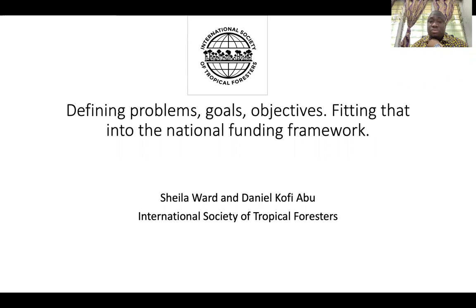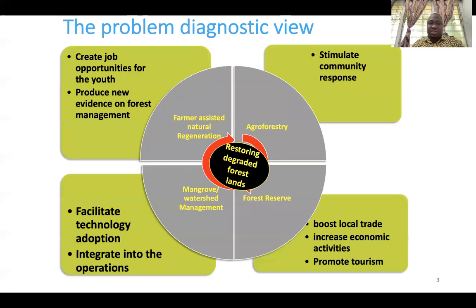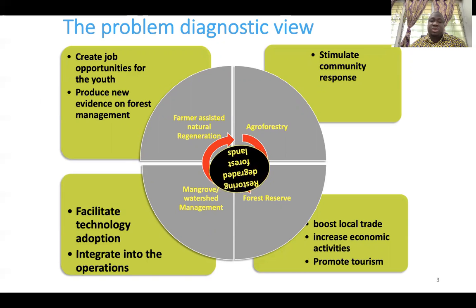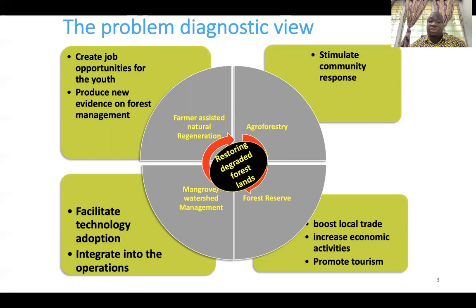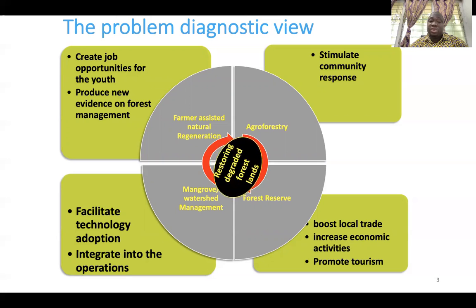My presentation would attempt to look at a problem diagnostic overview, certain goals within the national framework, and what are the national objectives. Let's assume that you want to define a particular trajectory that your chapter wants to go through. The first thing I would look at — I have used an example like restoring degraded forest lands — means that you have clearly seen a problem with forests being lost in your country, and the objective of that chapter is to help restore degraded forest lands.